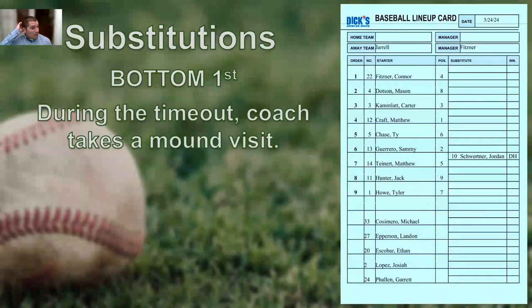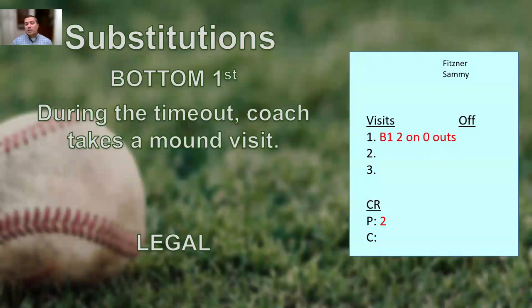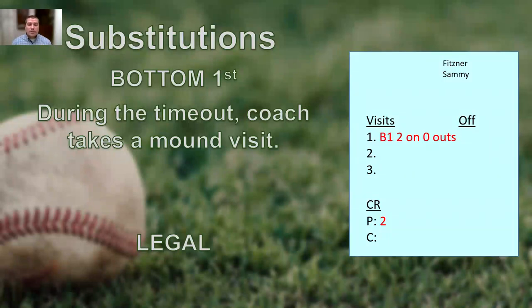Still in the bottom of the first inning, during a timeout, coach takes a mound visit — walks out to the mound to talk to his pitcher. This is absolutely legal, but this is going to be a visit. On the back of the lineup card under visits, we write 'B1' for bottom one, note two runners on base, no outs. I even put the batter number at the time — the more information you can record, the better, so if a coach disputes visit counts, you have specific details to reference.